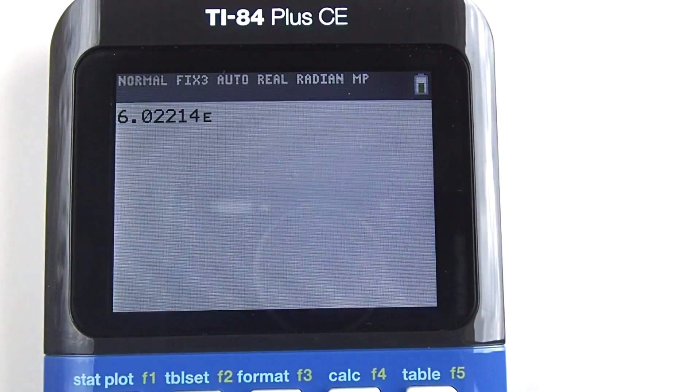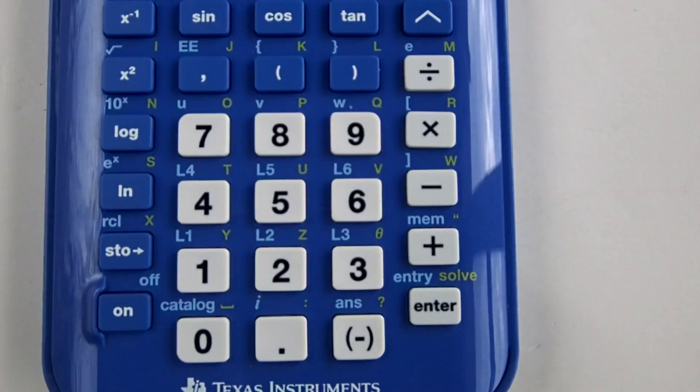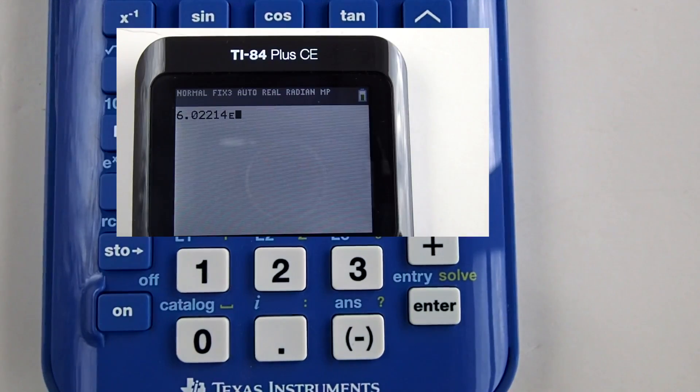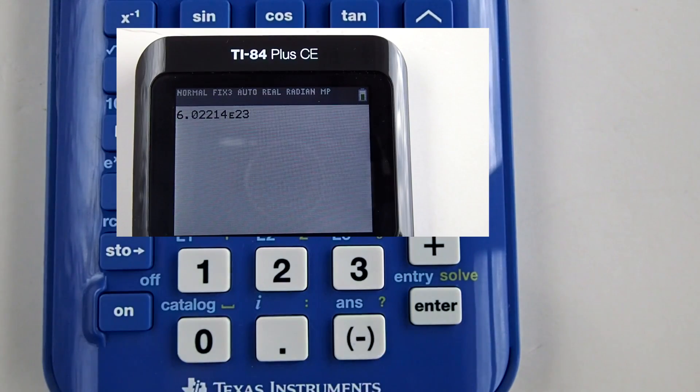Now we have to enter the exponent. Our exponent was 23. So we enter 23. Do not enter 10. The EE represents the 10. Enter 23 and press the enter key.